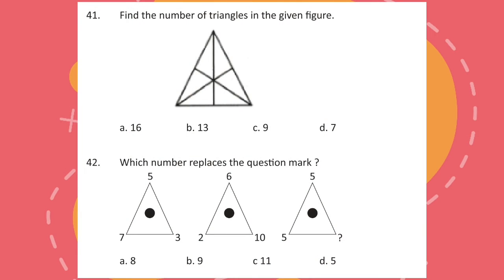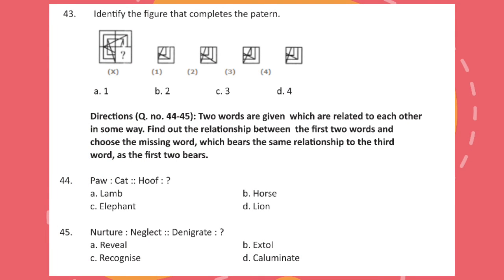Question 41. Find the number of triangles in the given figure. Question 42. Which number replaces the question mark? Question 43. Identify the figure that completes the pattern. Directions for questions 44 and 45: Two words are given which are related to each other in some way. Find out the relationship between the first two words and choose the missing word, which bears the same relationship to the third word as the first two bear.